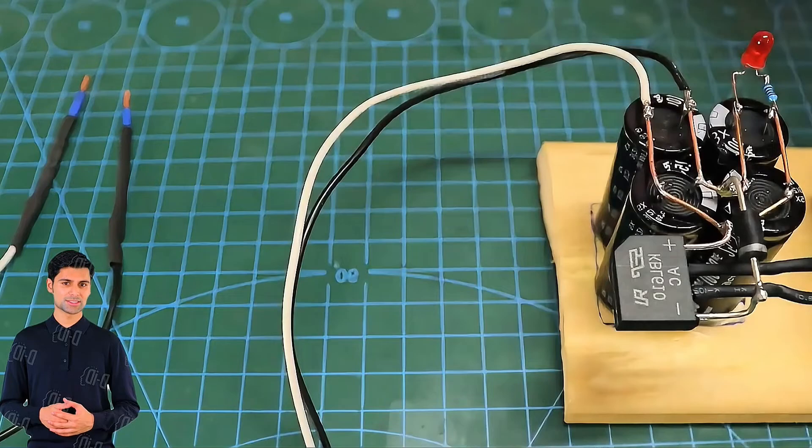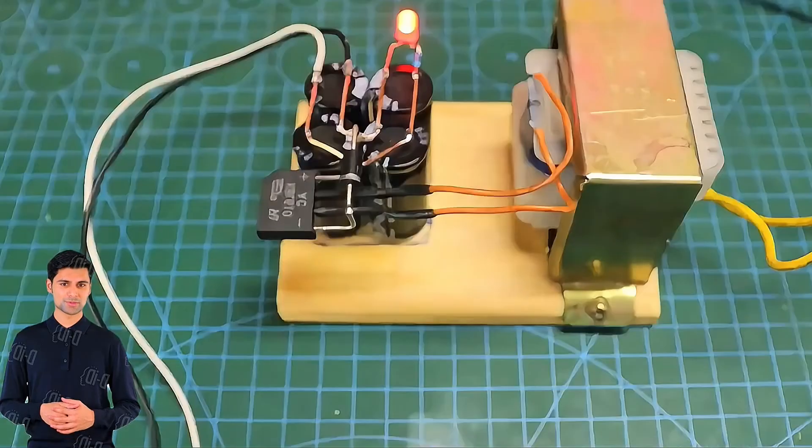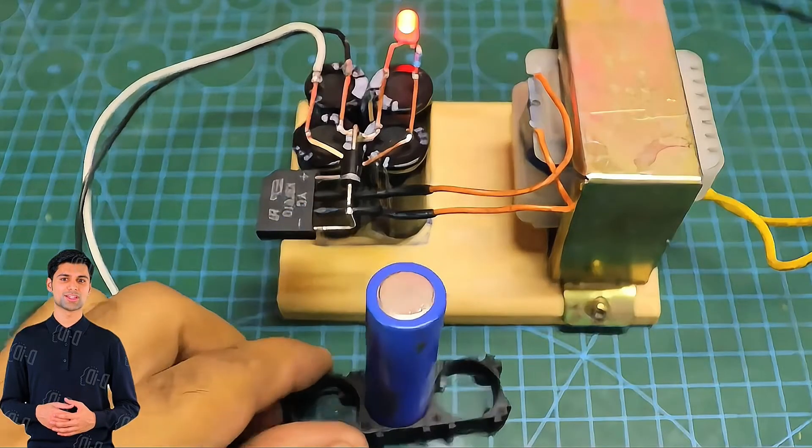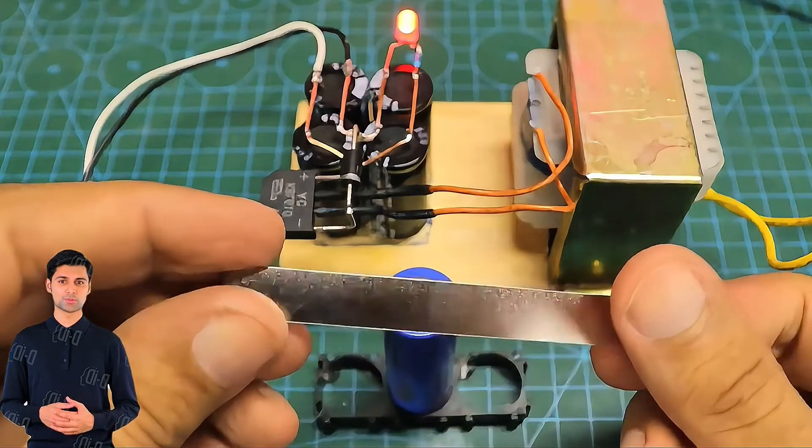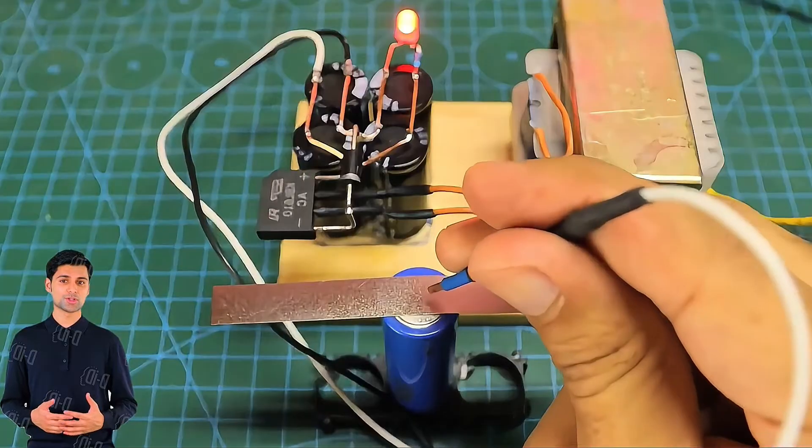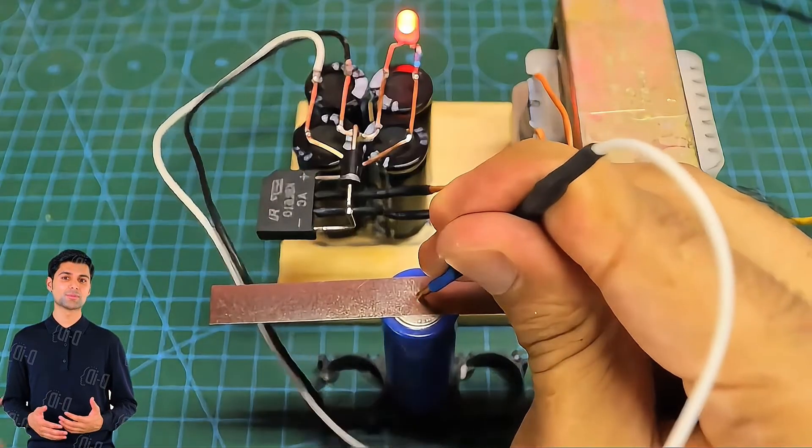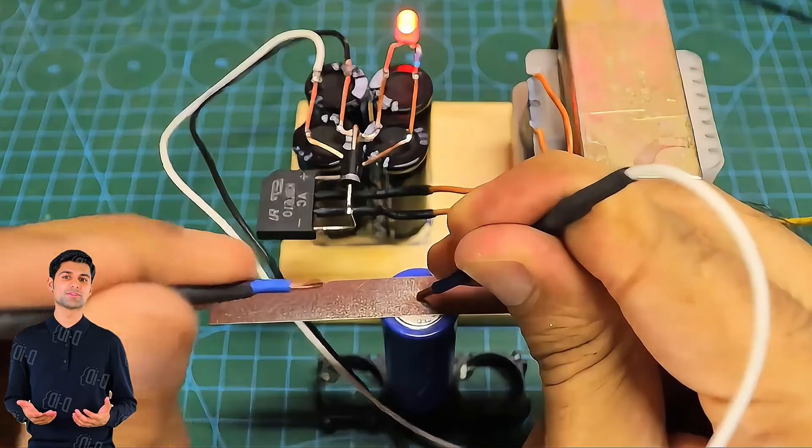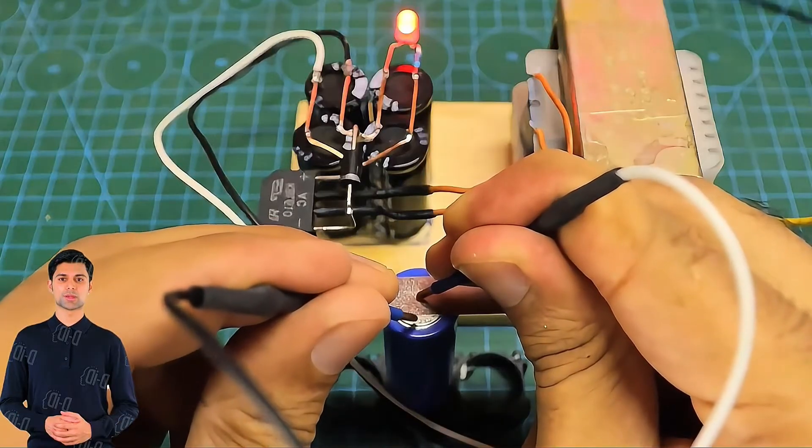When we need to use it, we connect the power supply and wait for the capacitor to charge. The charging speed of the capacitor depends on the capacity of the capacitor and the output current of the transformer. After it is fully charged, we only need to touch the two spot welding needles against the battery and the nickel strip to perform spot welding.